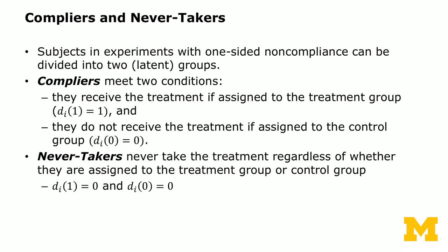Now we define two types of subjects important for understanding the instrumental variable unit. In an experiment with one-sided noncompliance, subjects can be divided into two latent groups: compliers and never-takers. Compliers meet two conditions: if assigned to the treatment group, they actually receive treatment — di(1) = 1 — and they do not receive treatment if assigned to the control group — di(0) = 0. These are your ideal subjects; they never deviate to the other group.